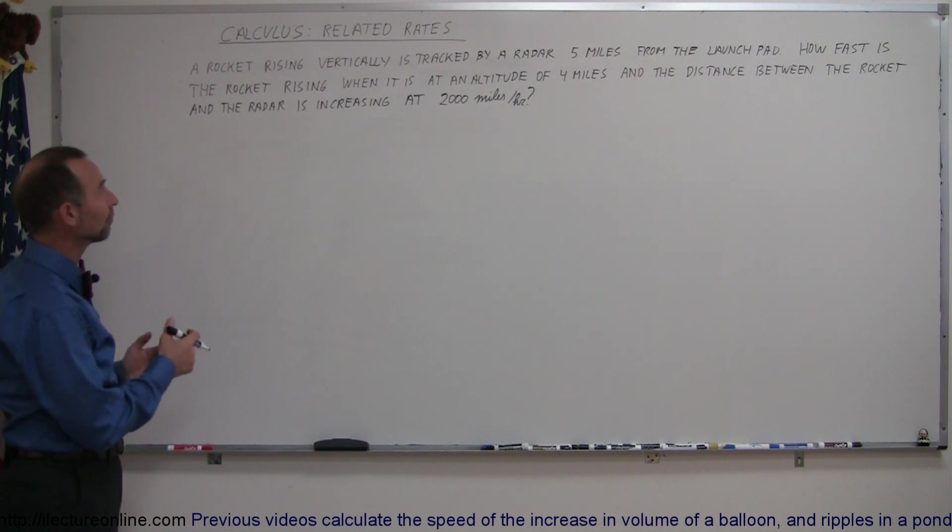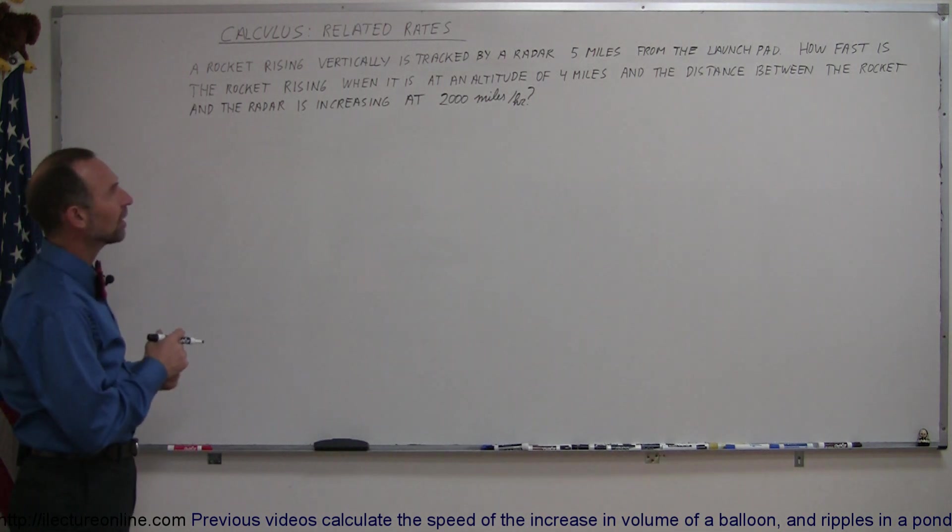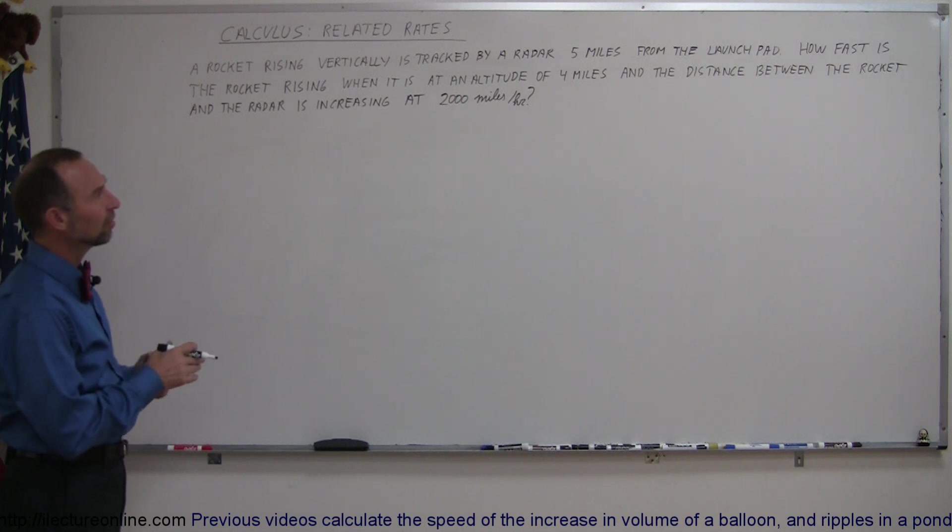It says here that we have a rocket that's rising vertically and being tracked by a radar that's five miles from the launch pad. How fast is the rocket rising when it is at an altitude of four miles and the distance between the rocket and the radar is increasing at 2,000 miles per hour?